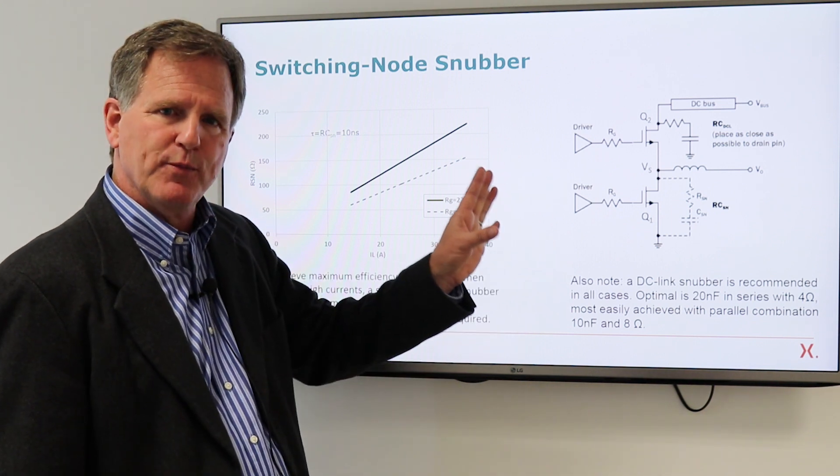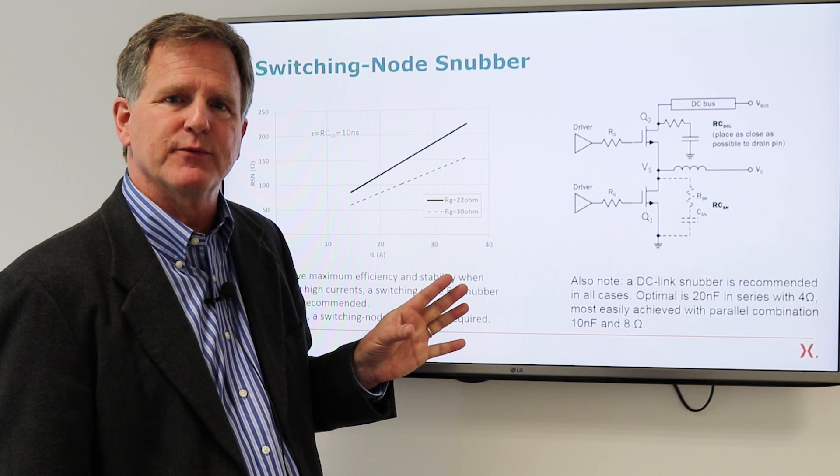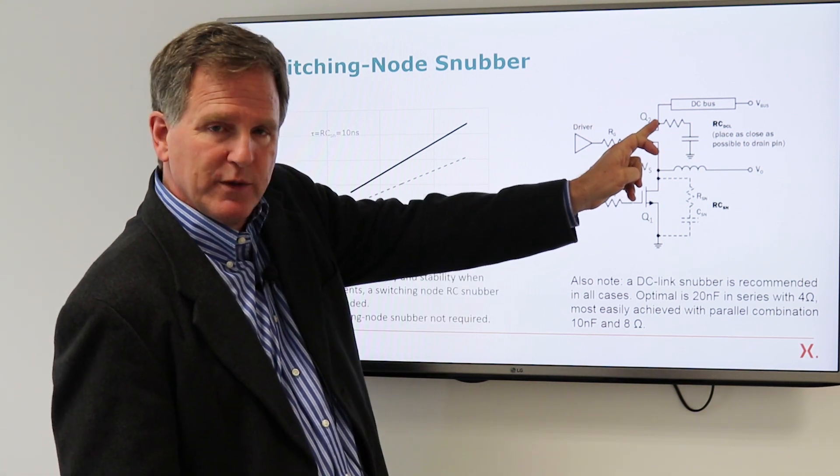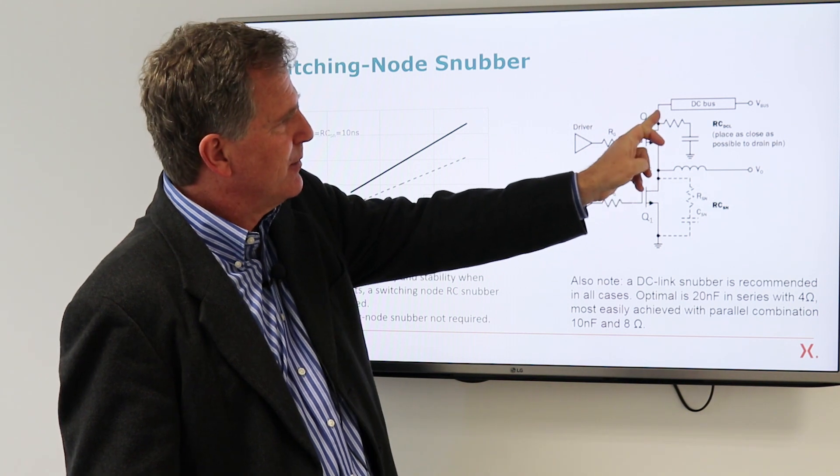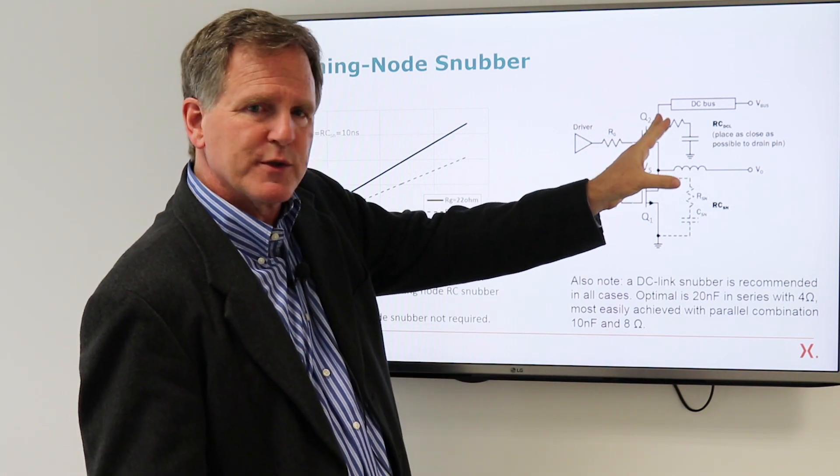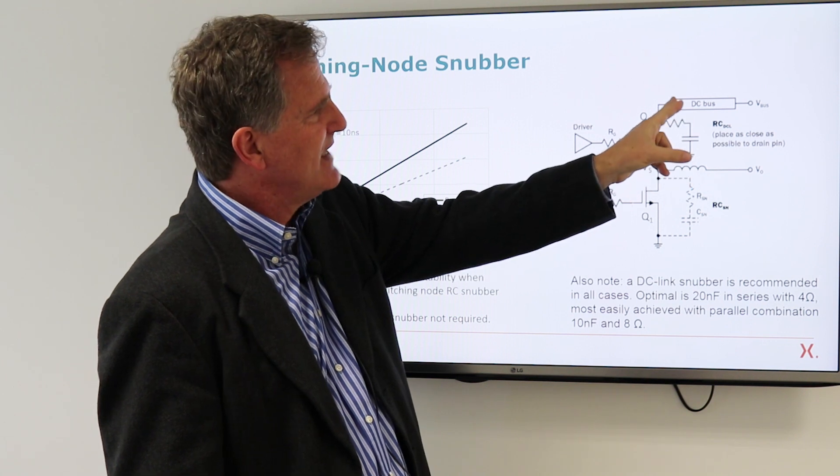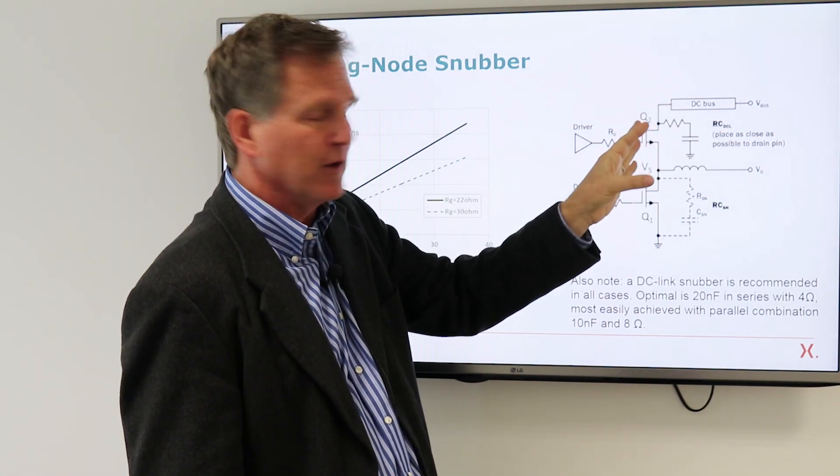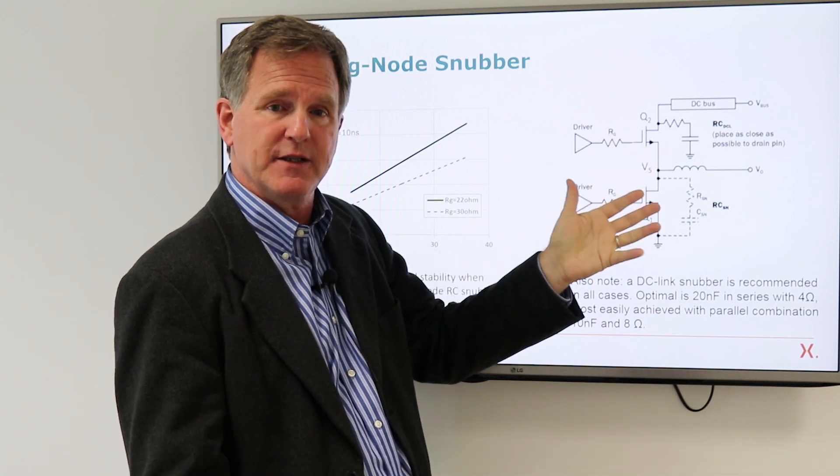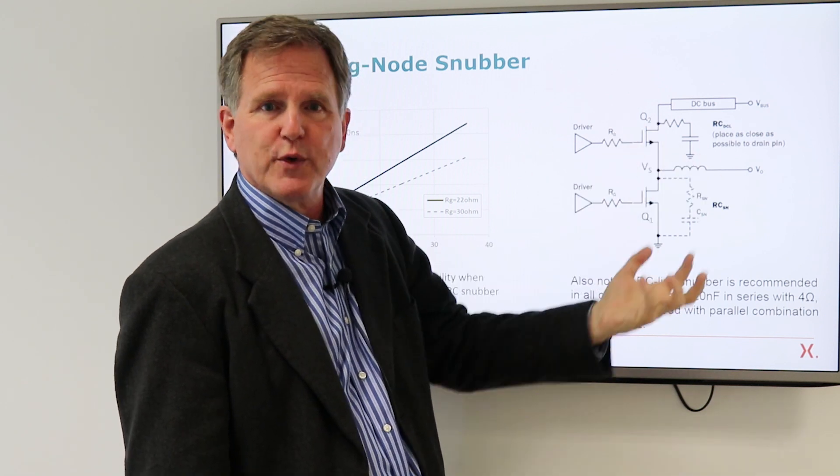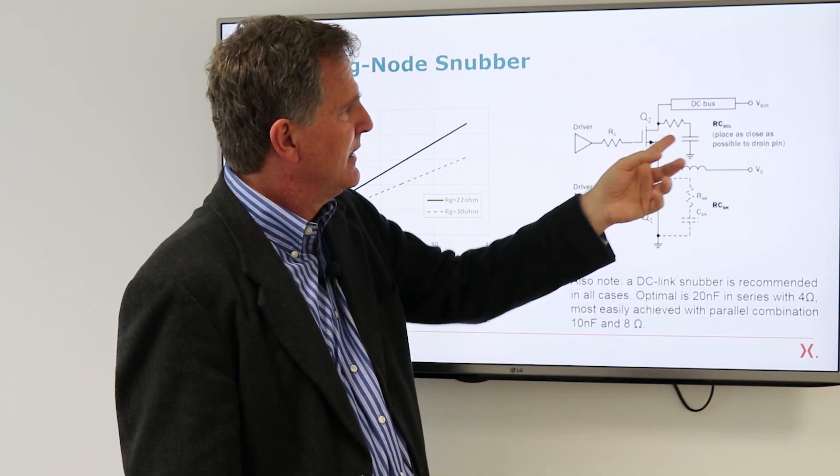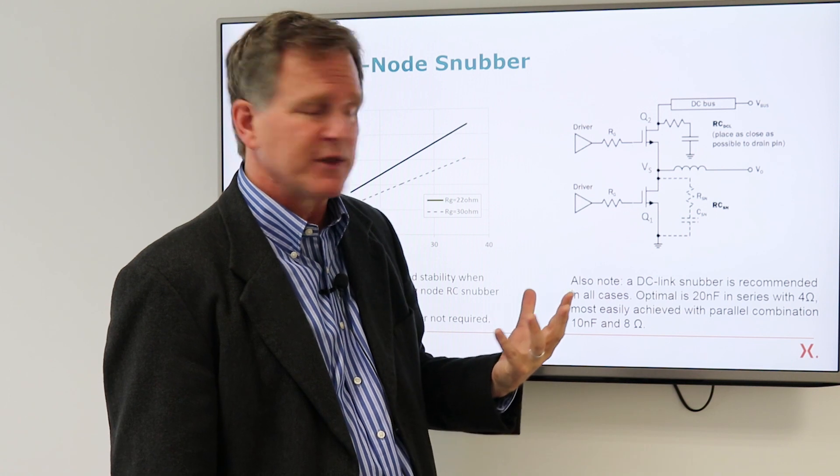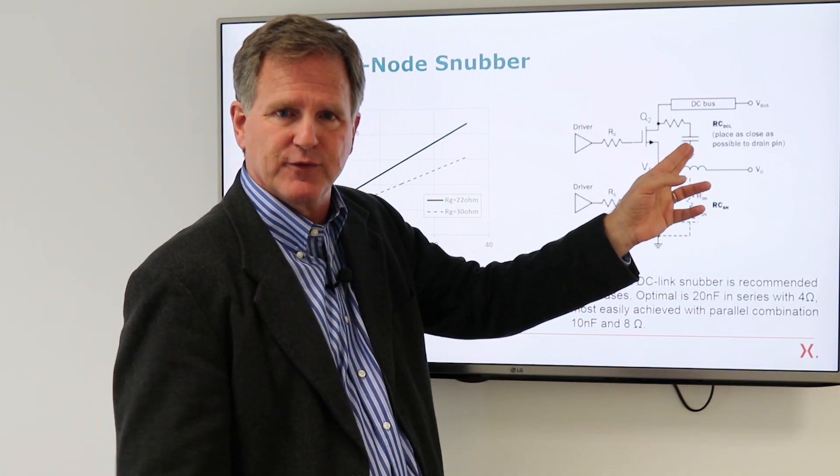One final point that we put on the data sheet is a recommendation for snubbers. The first one that we recommend in any case is an RC snubber at the DC link. And what this does is lowers the quality factor of any resonance in the bus. That resonance will act as a load on the high gain amplifier can lead to instability. The snubber lowers the Q and dramatically improves the stability of the switching. So that's a good recommendation in any case.